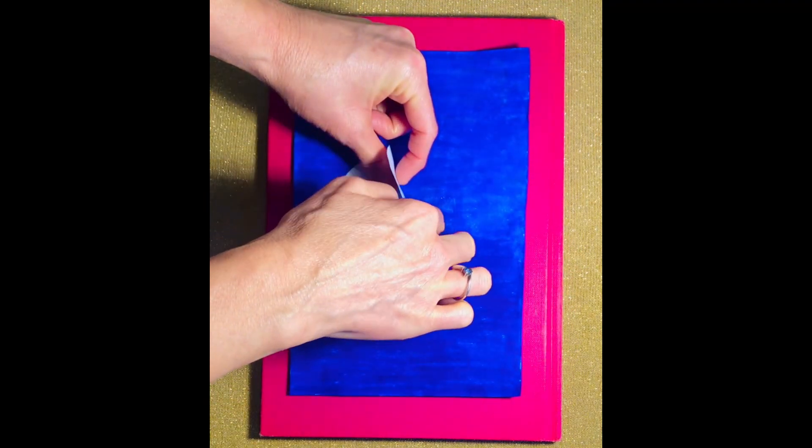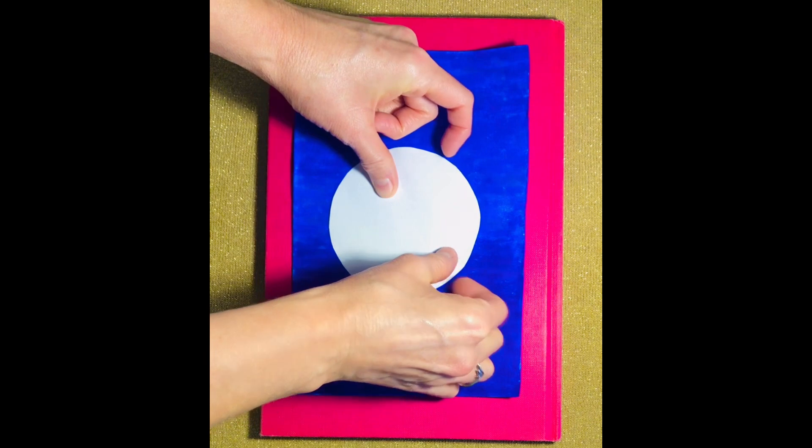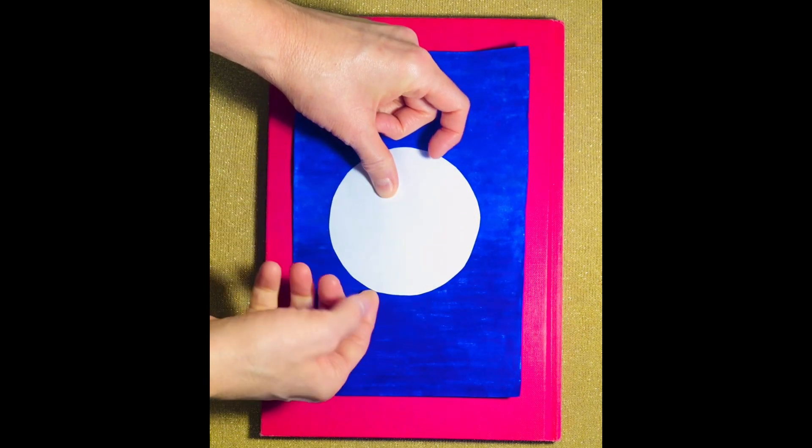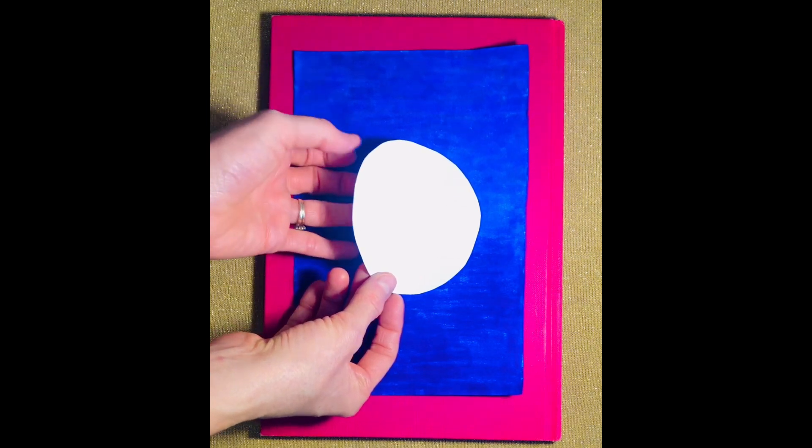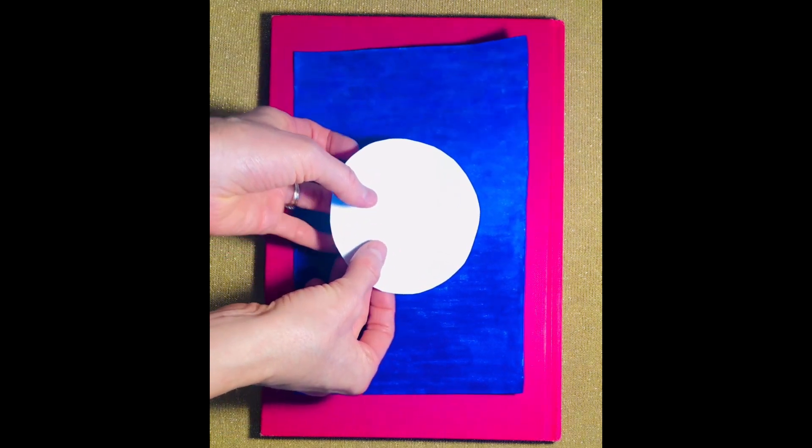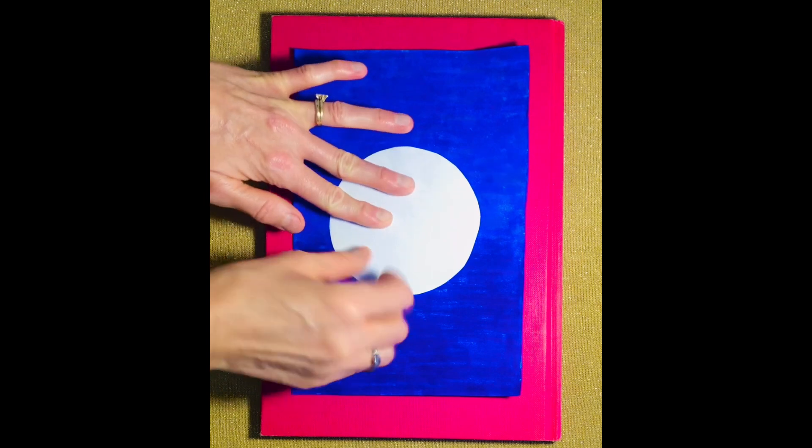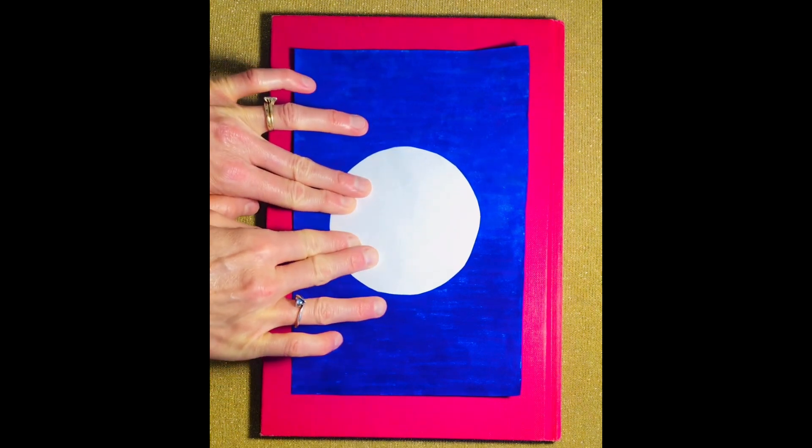Then you will position your moon on your paper where you'd like it to be and I am using double-sided tape to secure my moon to my paper. But glue works just as well as this double-sided tape.